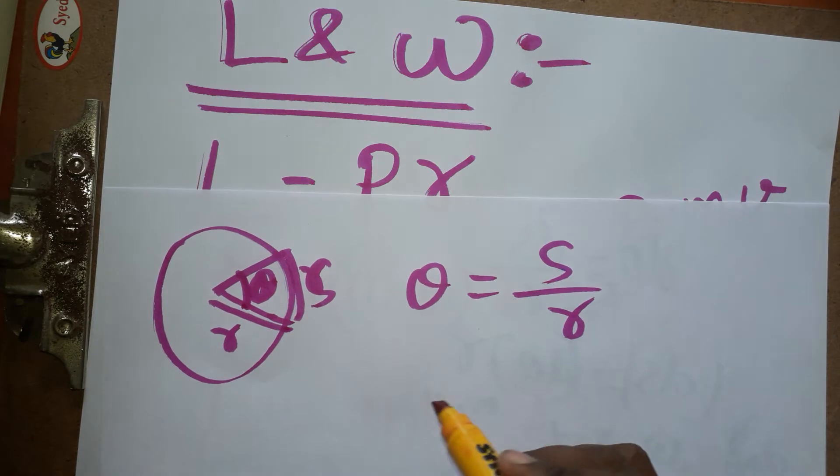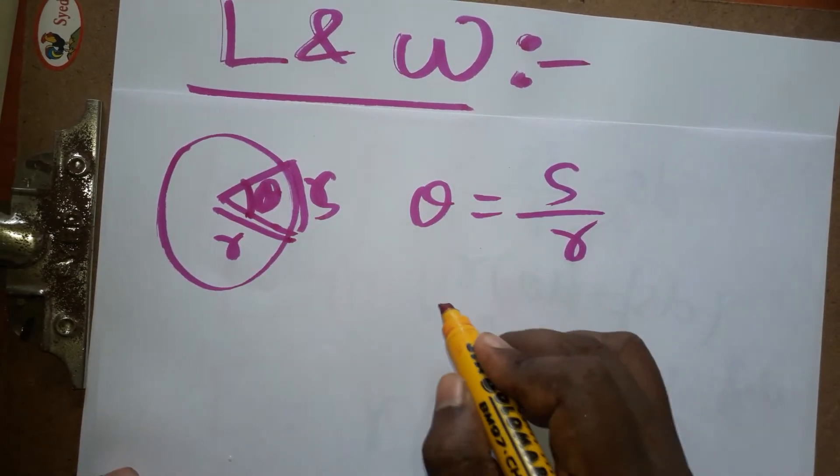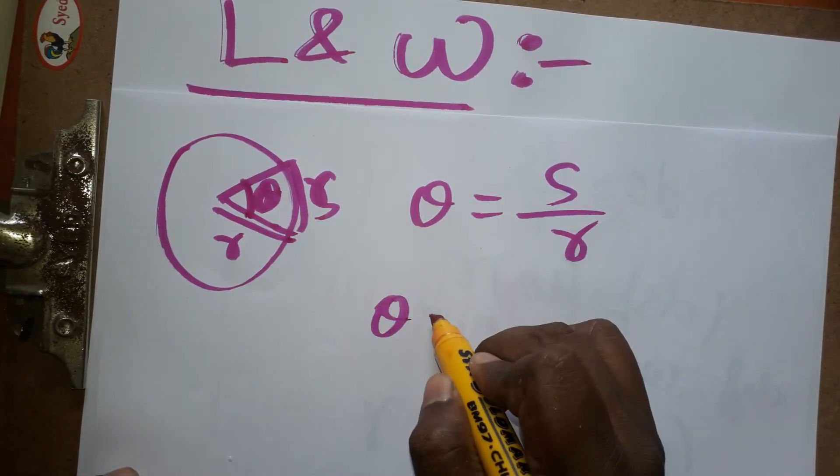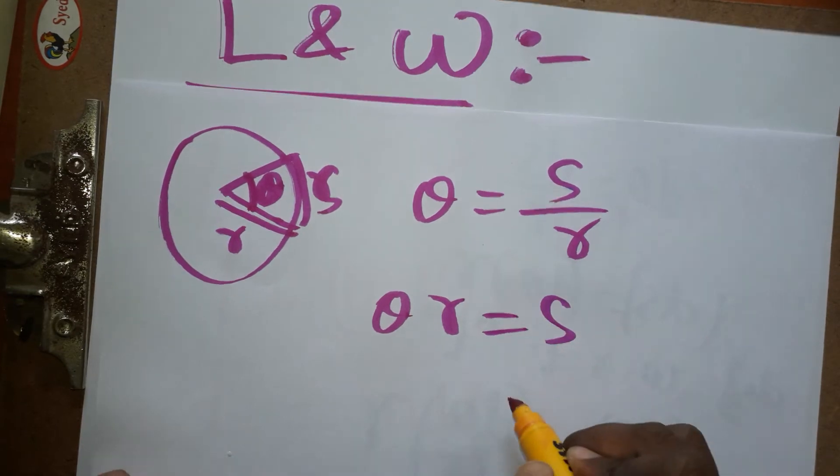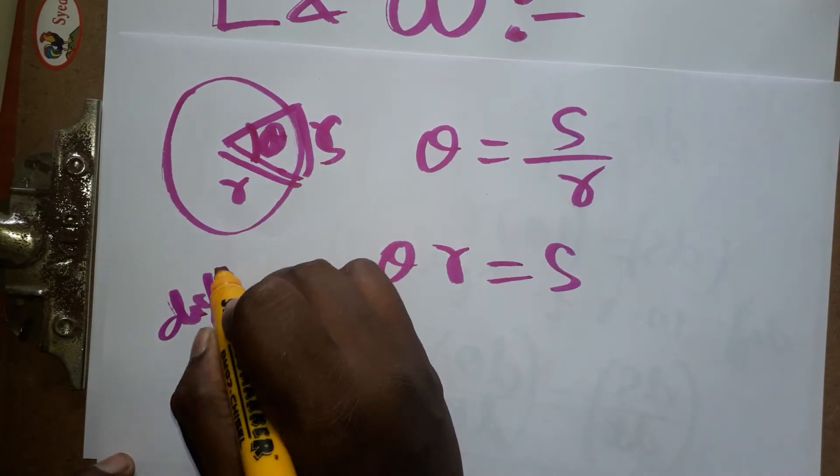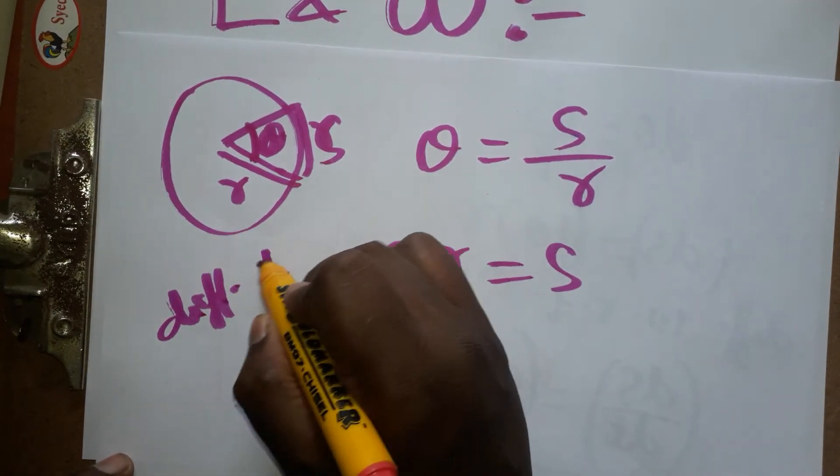So theta times r is equal to s. Directly I am going to differentiate the above equation. So differentiating with respect to time: d theta by dt times r equals ds by dt.